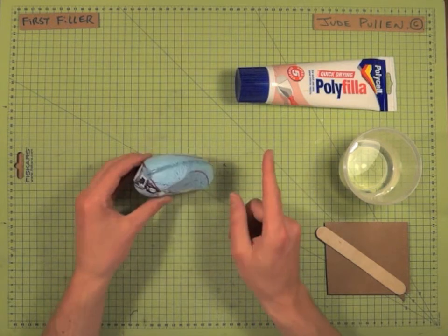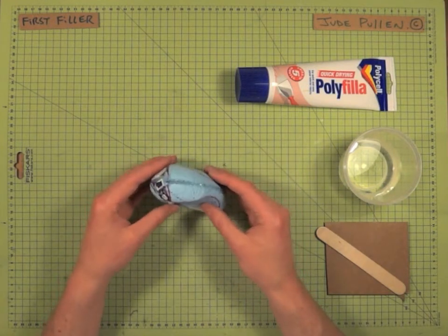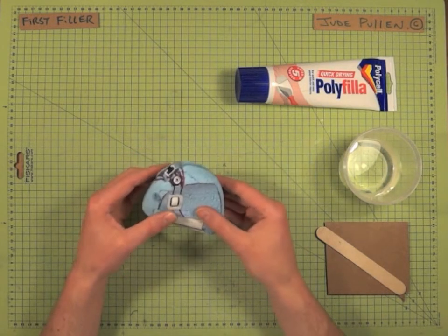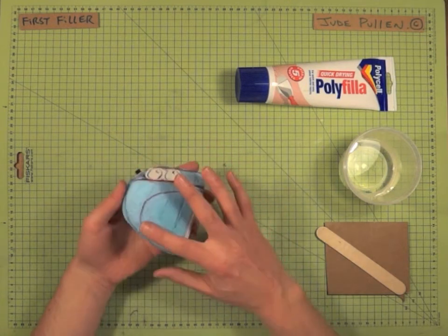So now we'll look at the first filler surface, which I'd recommend is a water-based product like polyfiller or spackle, I think it is in the States, and basically just begin layering this up.